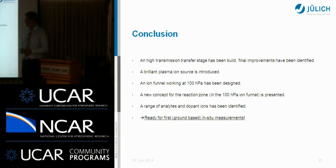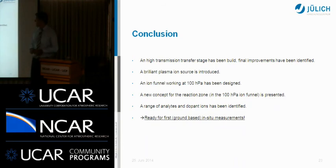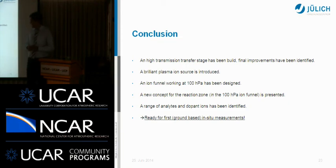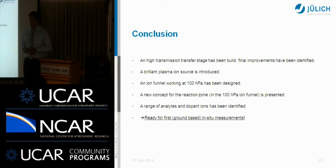We are already at the conclusions. We have built a high-transmission transfer stage and identified the final improvements. We have introduced a bright plasma ion source which can also generate our dopant ions. It is relatively small, so you can use multiple ion sources in one instrument, potentially combining different chemistries. We have built an ion funnel working at 100 hectopascal and introduced a concept to make a reaction zone in the 100 hectopascal ion funnel, thereby losing only a few ions. We have identified a range of dopant ions, and therefore we are ready for first ground-based measurements to characterize our instrument.